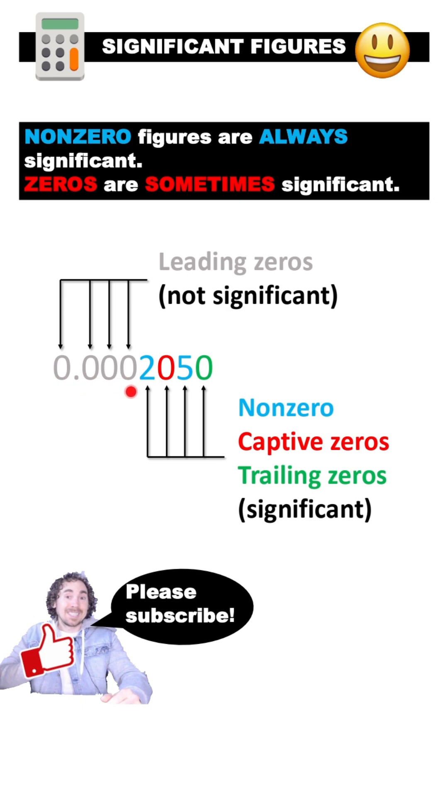Leading zeros are never significant, meaning they're not trying to be a zero. Instead, they're just holding the place of the decimal, showing its location.